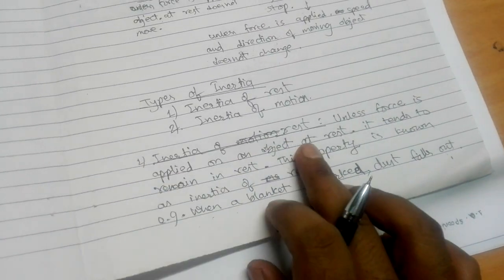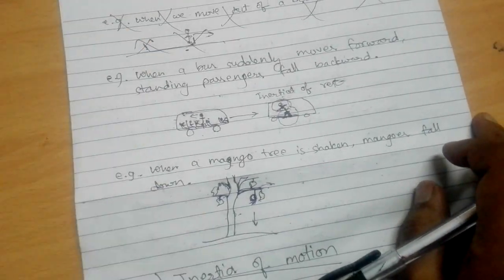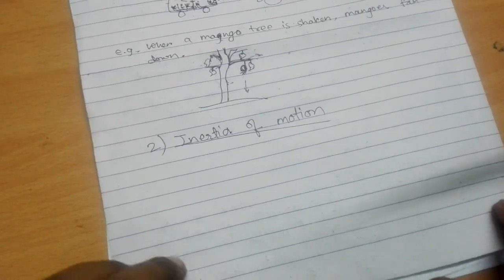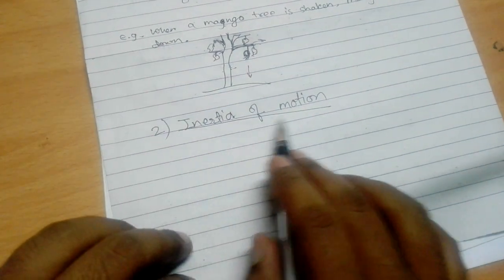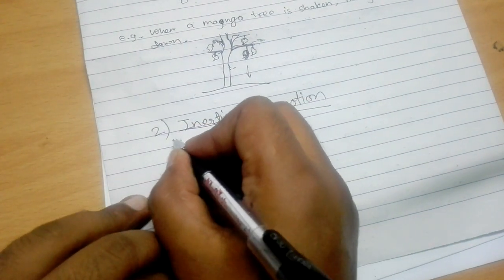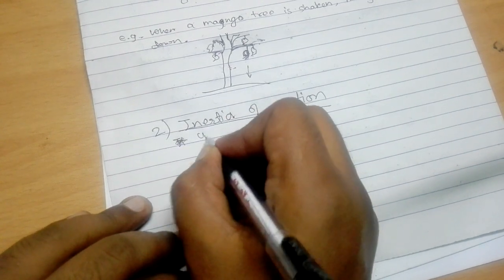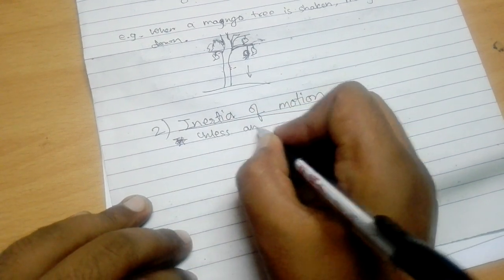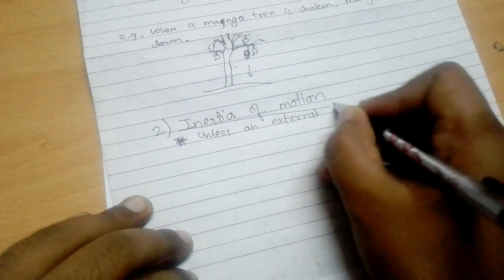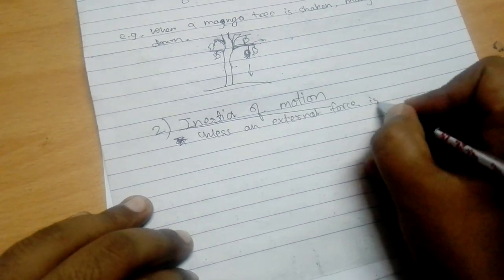Inertia of motion explains both why the speed of a moving object does not change and why the direction of a moving object does not change unless external force is applied. The 'uniform motion' part explains inertia of speed, and the 'straight line' part explains inertia of direction — but both are part of inertia of motion, not separate types.